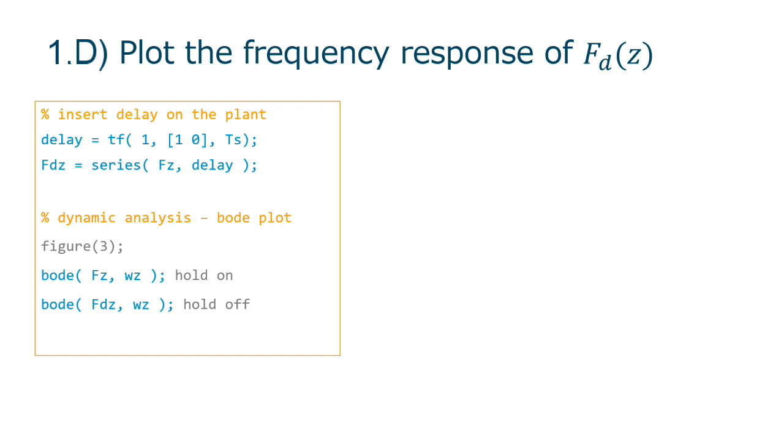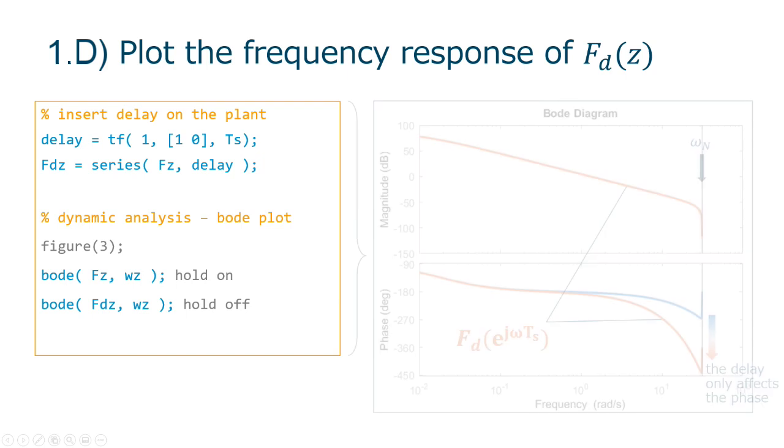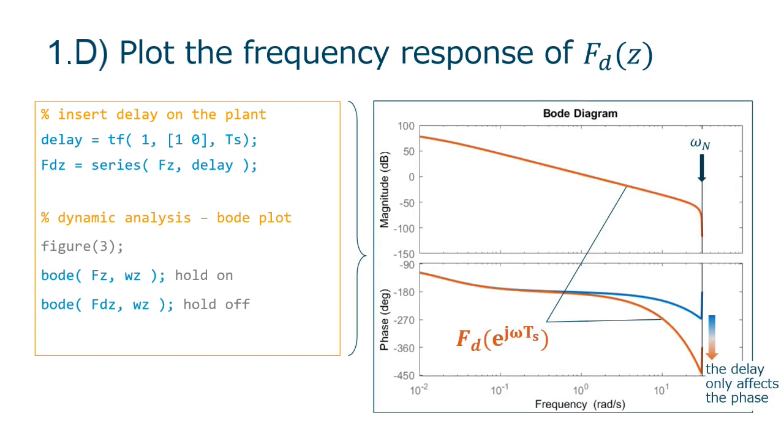Again, back to our script file, we add the delay to the plant's transfer function and plot the bode. As we expected, the delay will only affect the phase, as it does not change the shape over the magnitude of the signals.